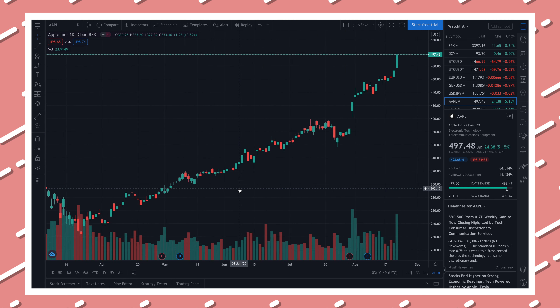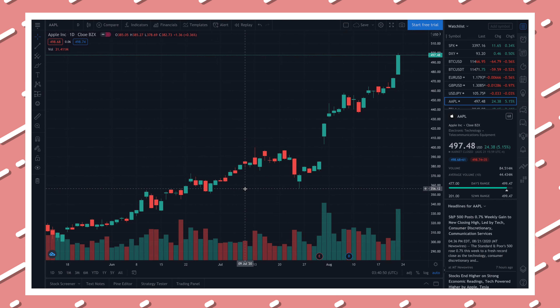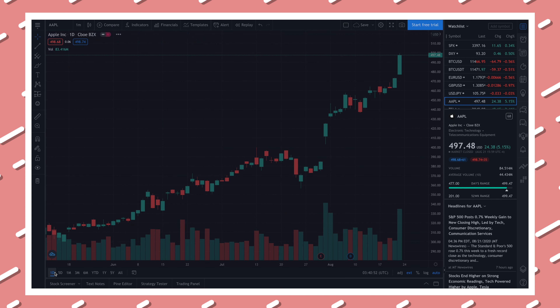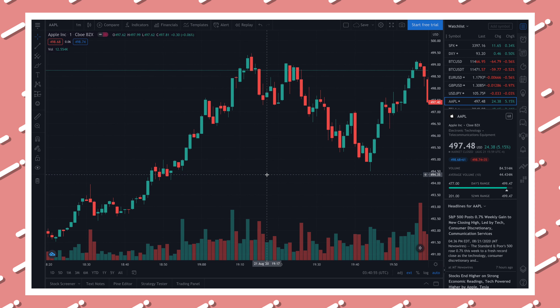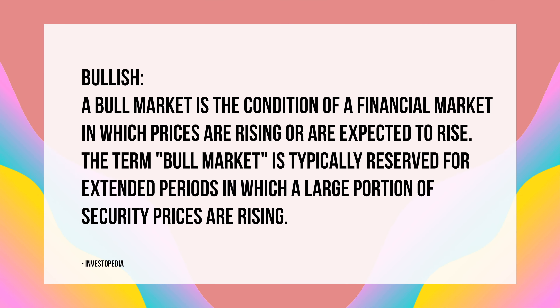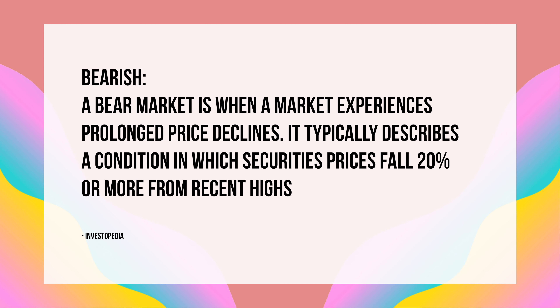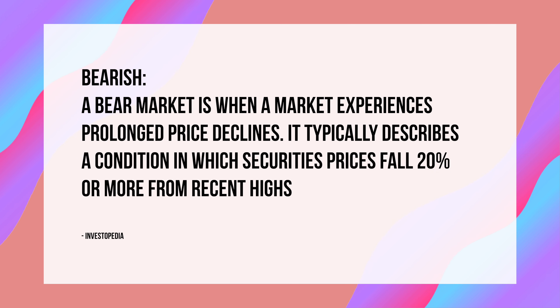You'll see that candlesticks can be better than line charts just because they show more information visually and the price action of a stock. Now that you see how candlesticks work and how to read them, you can use them to see if there's a bullish pattern or a bearish pattern. A bullish pattern means there's an uptrend and it's likely to keep going up, and a bearish pattern means it's likely to keep going down.